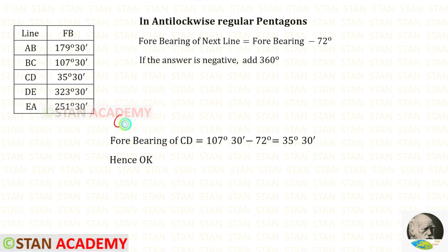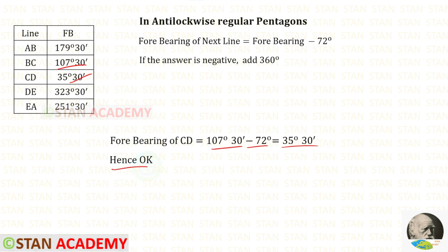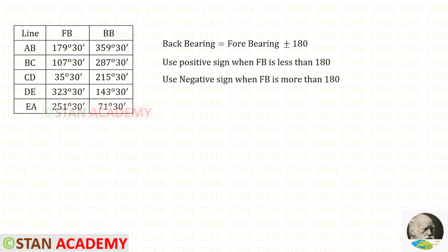Now let us apply a check. We already know the forebearing of CD. But using this formula, let us find it one more time. 107 degrees 30 minutes minus 72 degrees gives us 35 degrees 30 minutes. We have got the same value, so hence OK. We have found all of the forebearings.